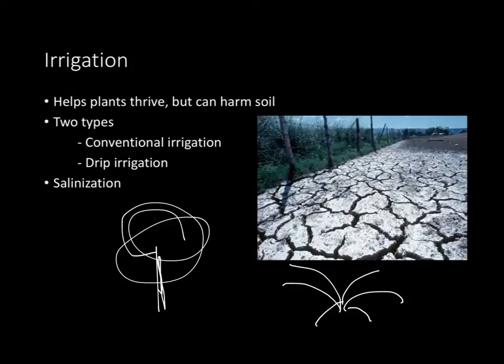Along the same lines of irrigation, there's something known as salinization. If you irrigate an area that's very prone to evaporation, when that water evaporates, a lot of salt forms on the topsoil, which completely destroys the land. This can also happen if you overwater or overirrigate certain soils. Salinization is terrible because the salt literally cracks and hardens the soil on top, making it unusable for future generations.